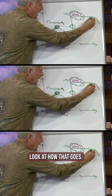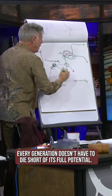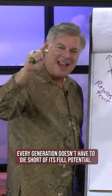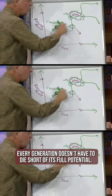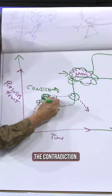Look at how that goes. And then if you're lucky, someone there will go, ooh, and they're going to break it. Every generation doesn't have to die short of its full potential. It has to be willing to endure the contradiction.